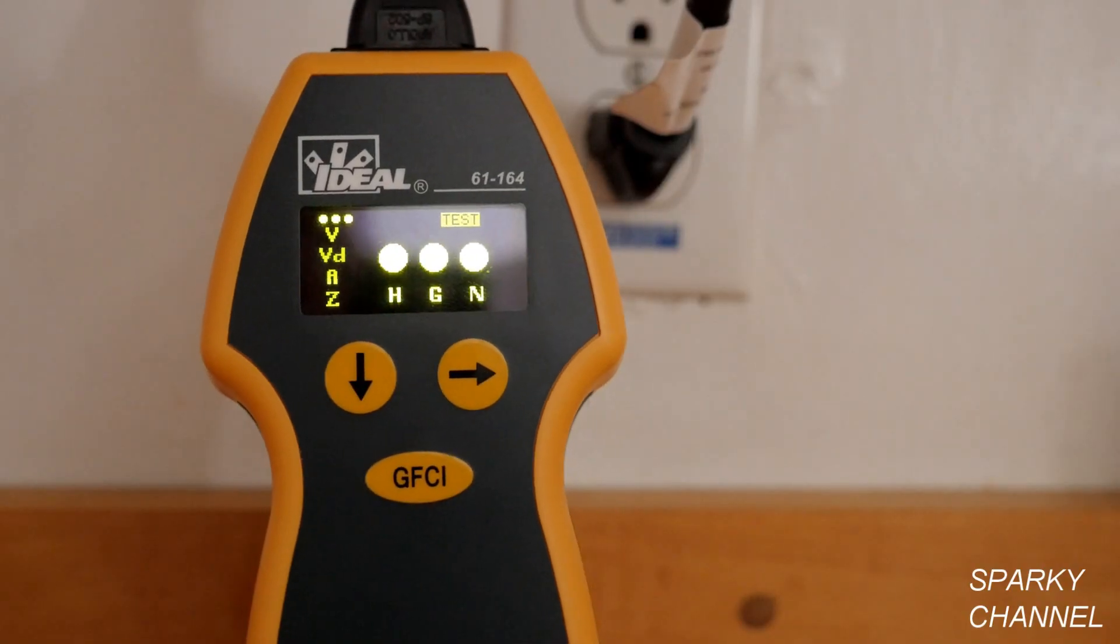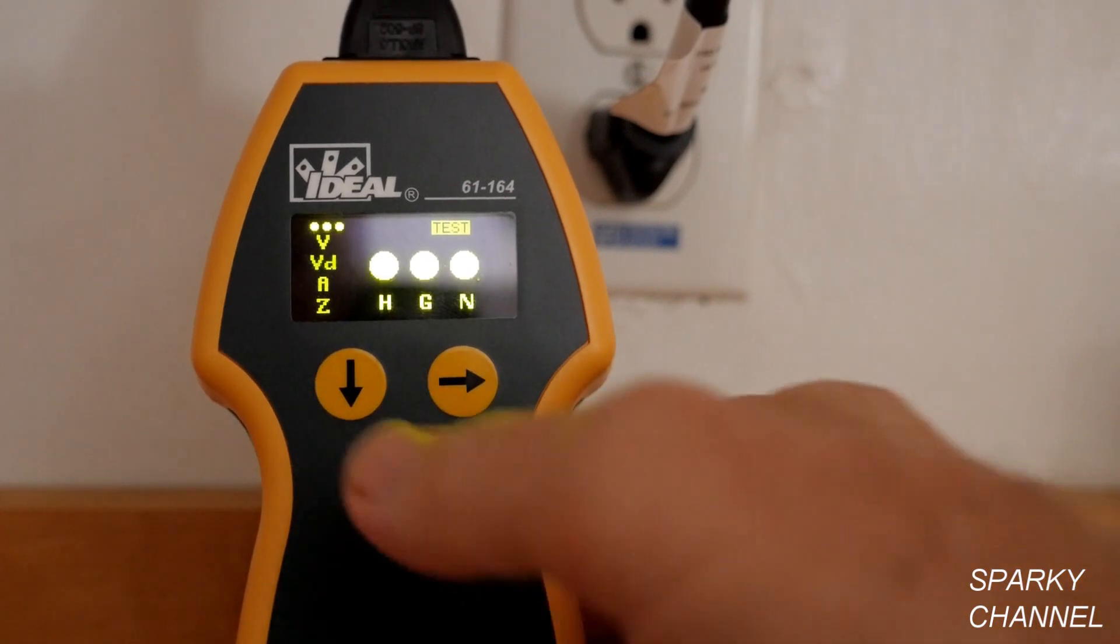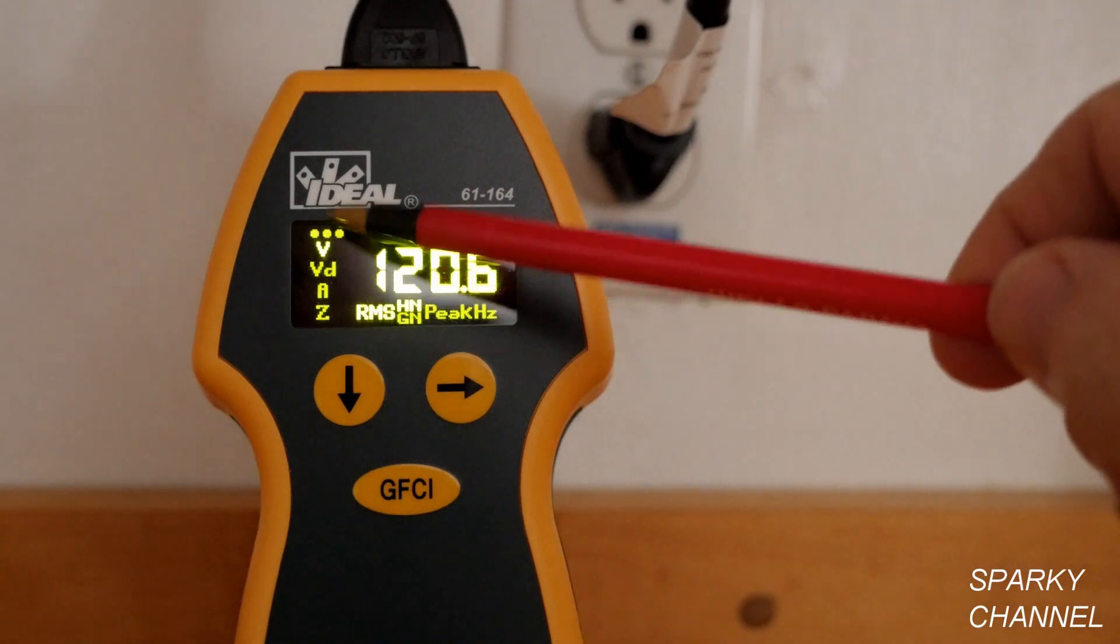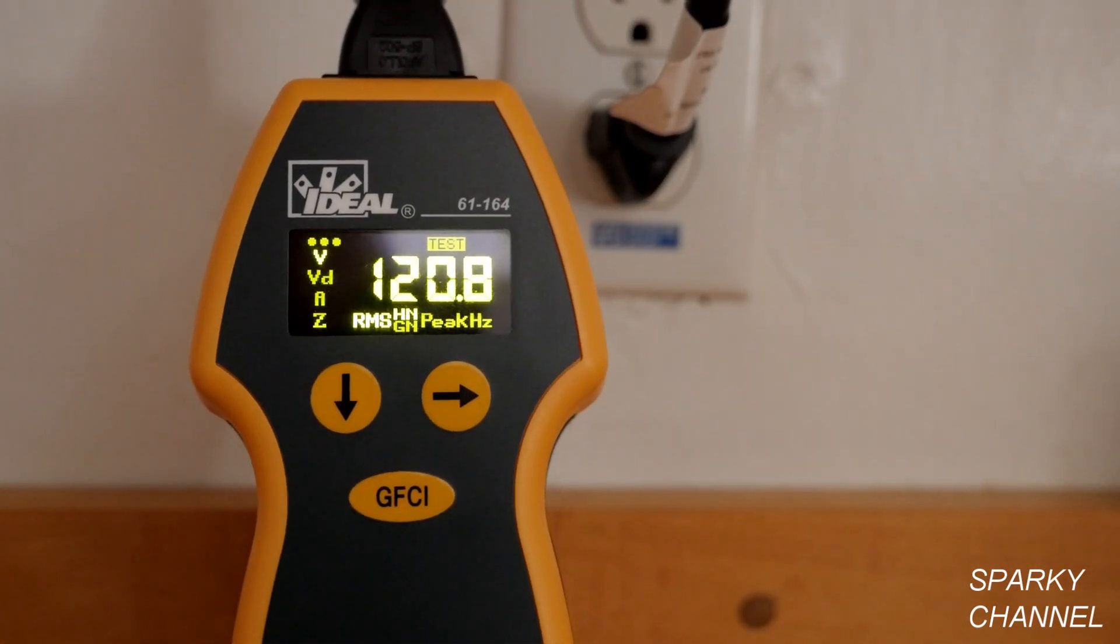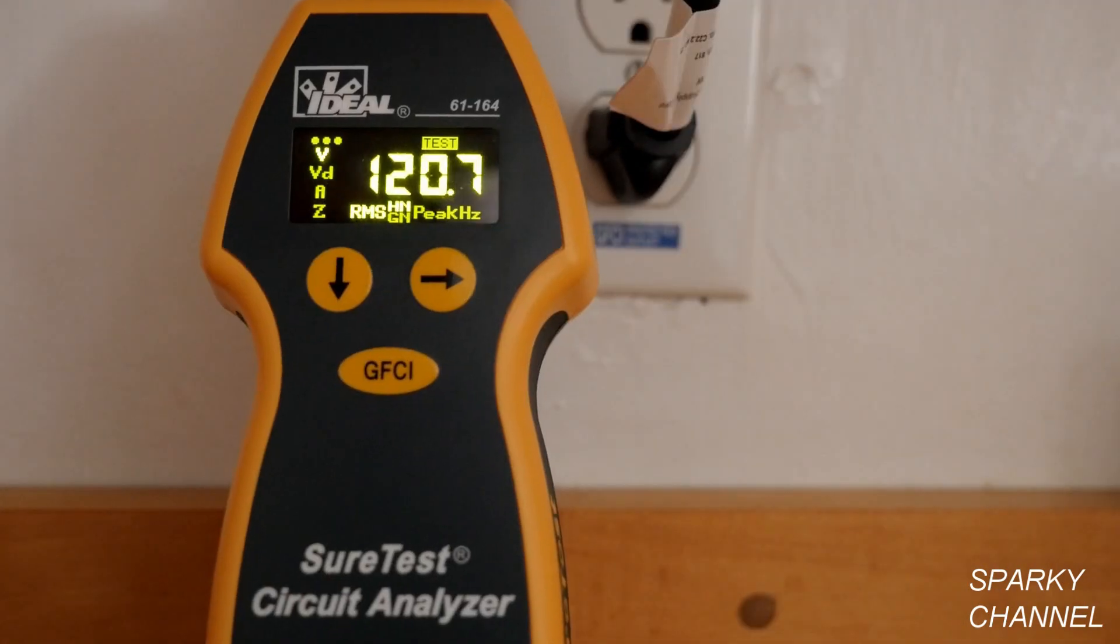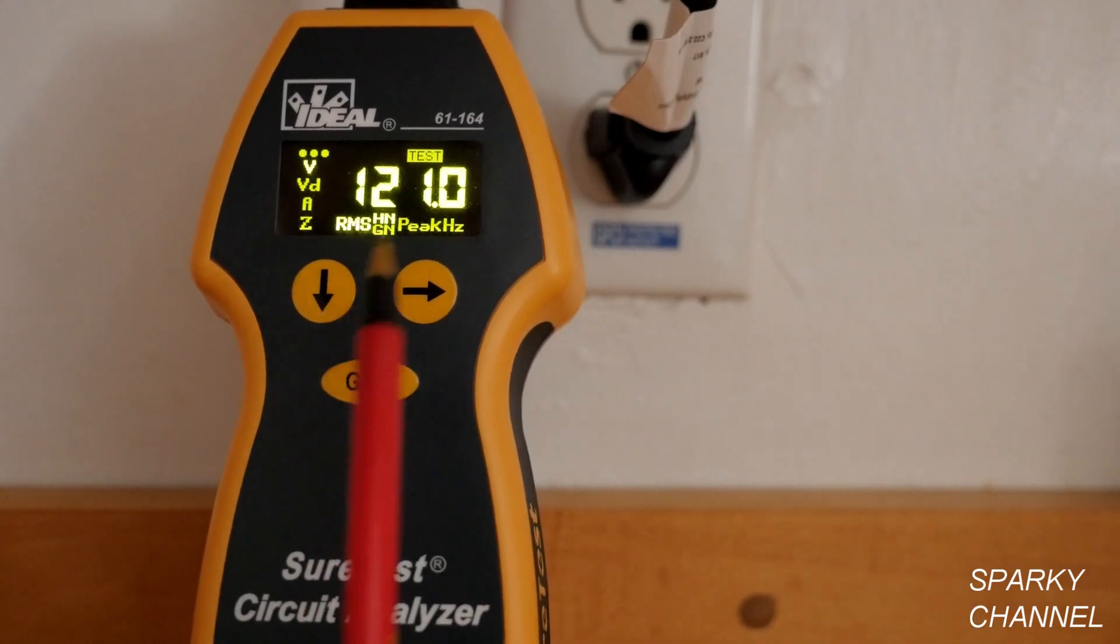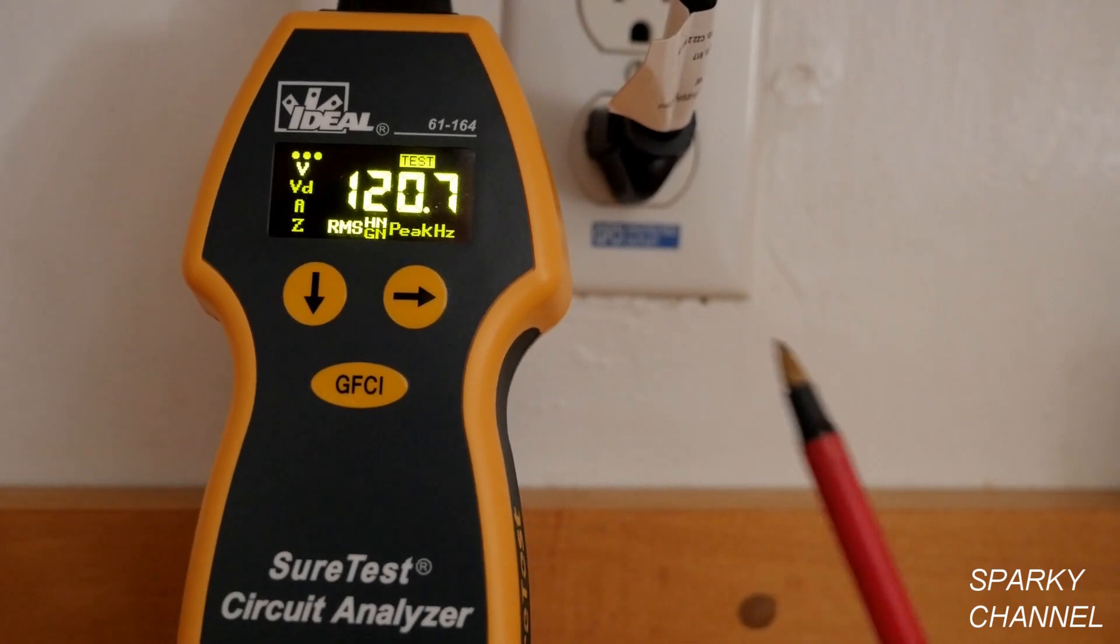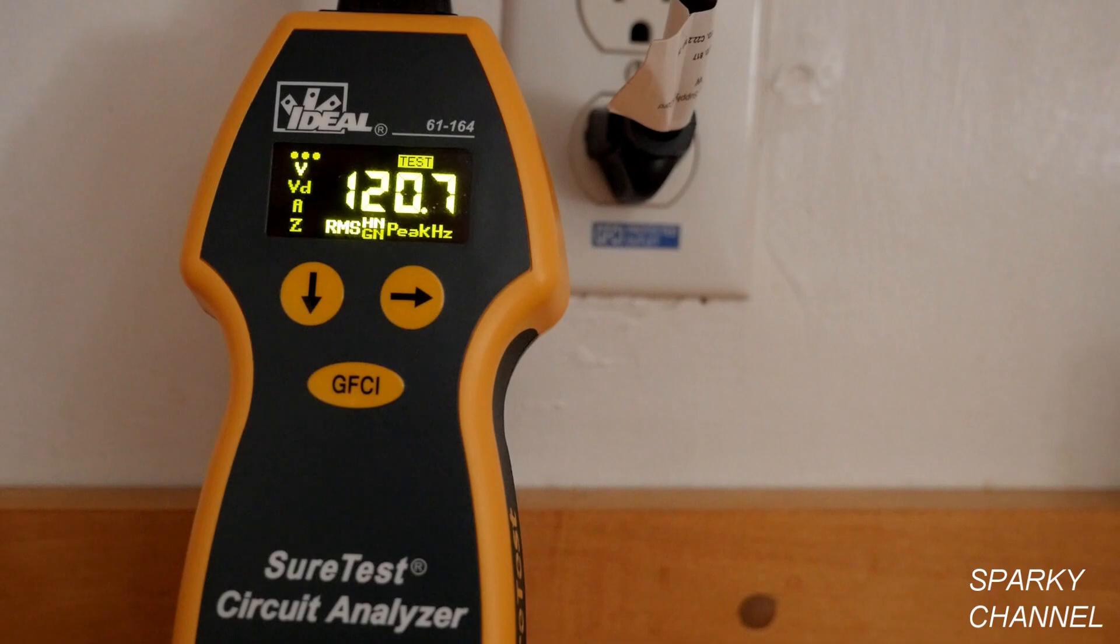To move to the next test, we're going to press this down arrow and go to voltage. The V is lit up now. This is true RMS voltage at 120.8. True RMS meters are more expensive than regular meters. We have RMS, hot, neutral. So between the hot and the neutral, there's 120.8 volts AC.